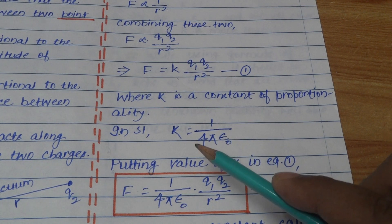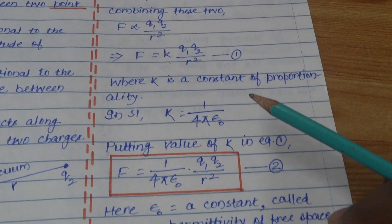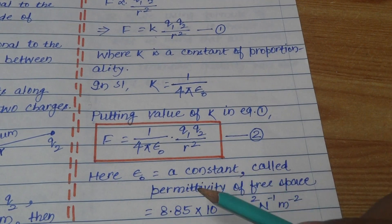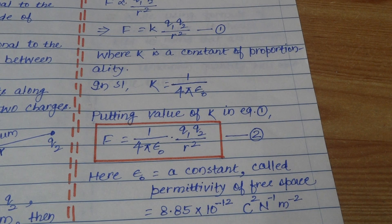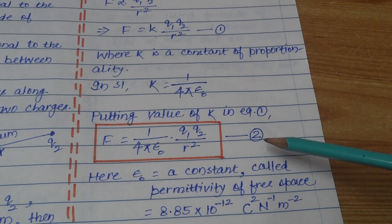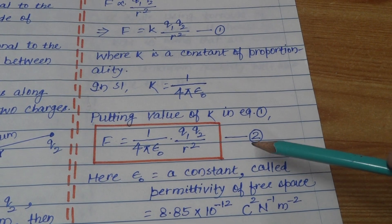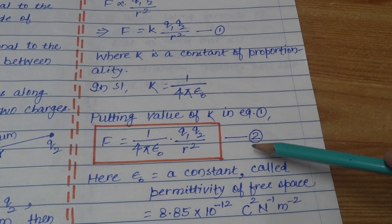Putting the value of K into Equation 1, the formula for force becomes F = (1 / 4πε₀) × Q1 Q2 / R squared. This is the final formula we will use to calculate the electric force acting between two point charges.